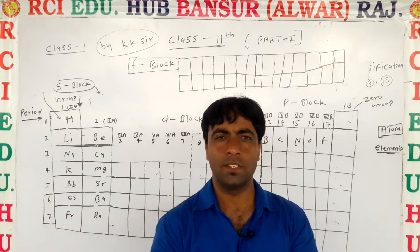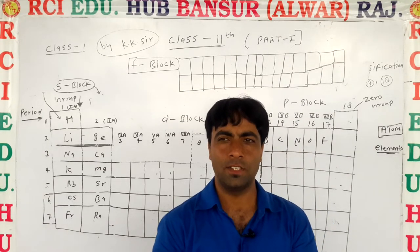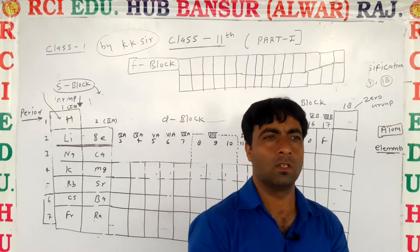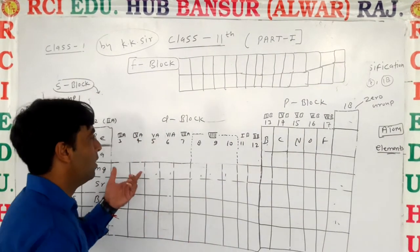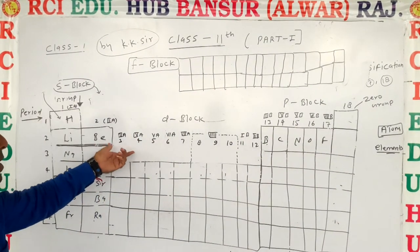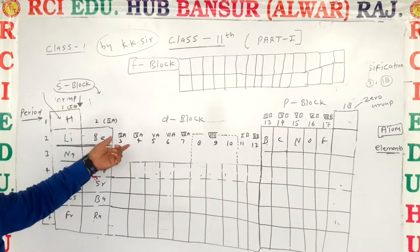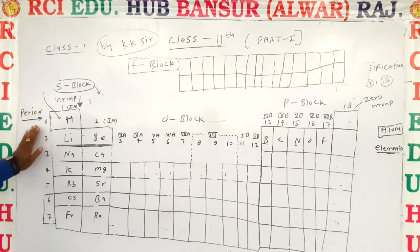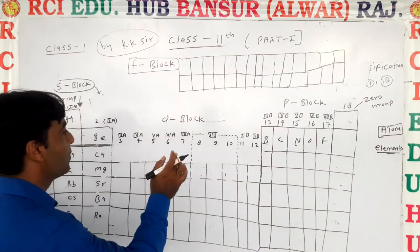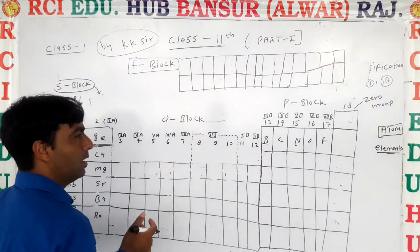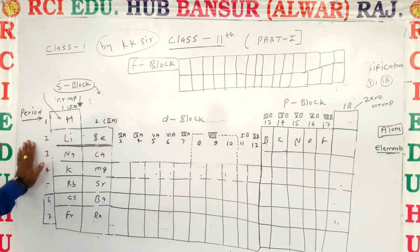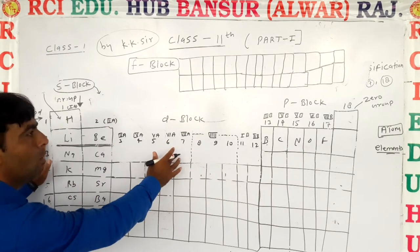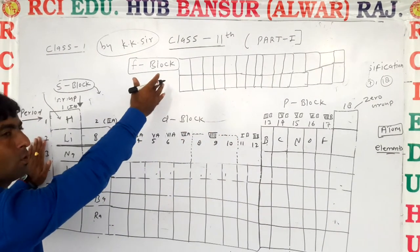Welcome to RCAE Education Hub Bansur Online Classes. In the previous class, we studied about the modern periodic table representation and its formation. In this class, we will see how we fulfill the numbers of elements in S block, D block, P block, and also in F block.